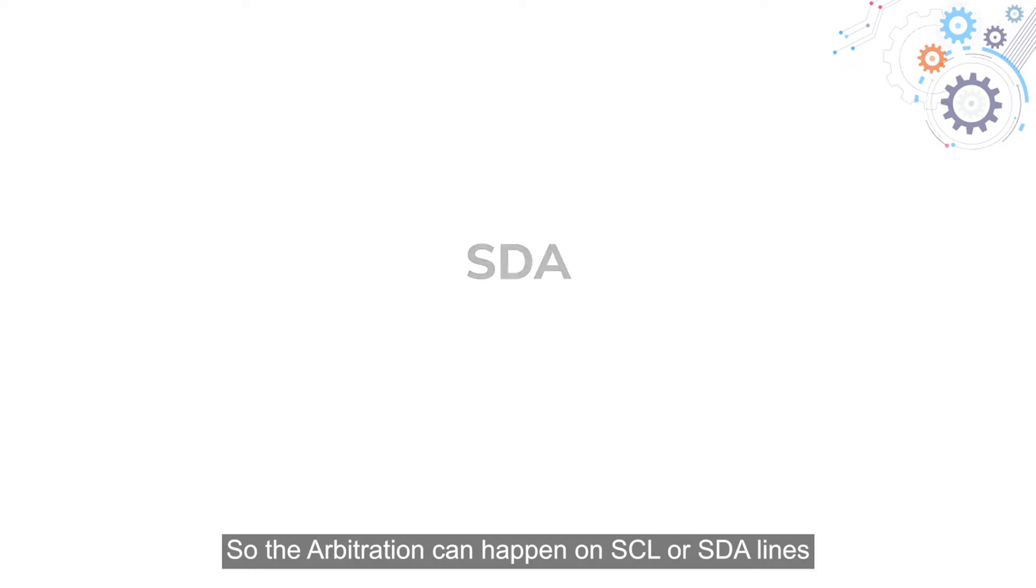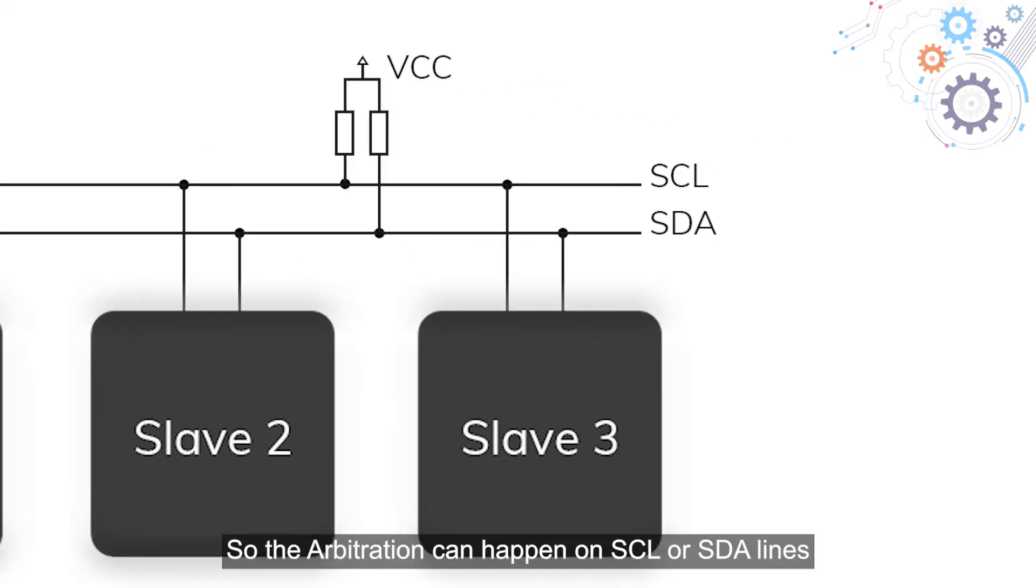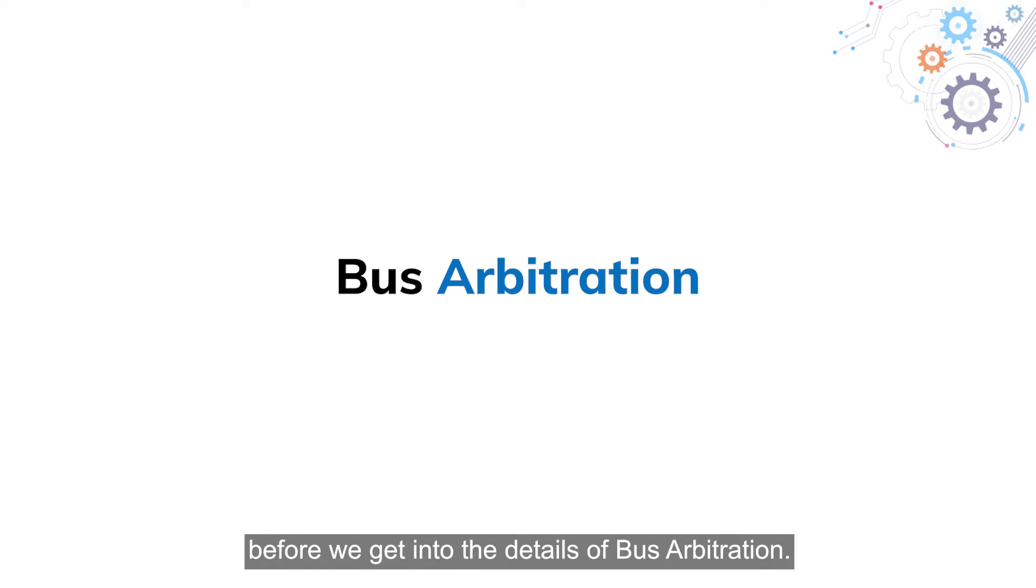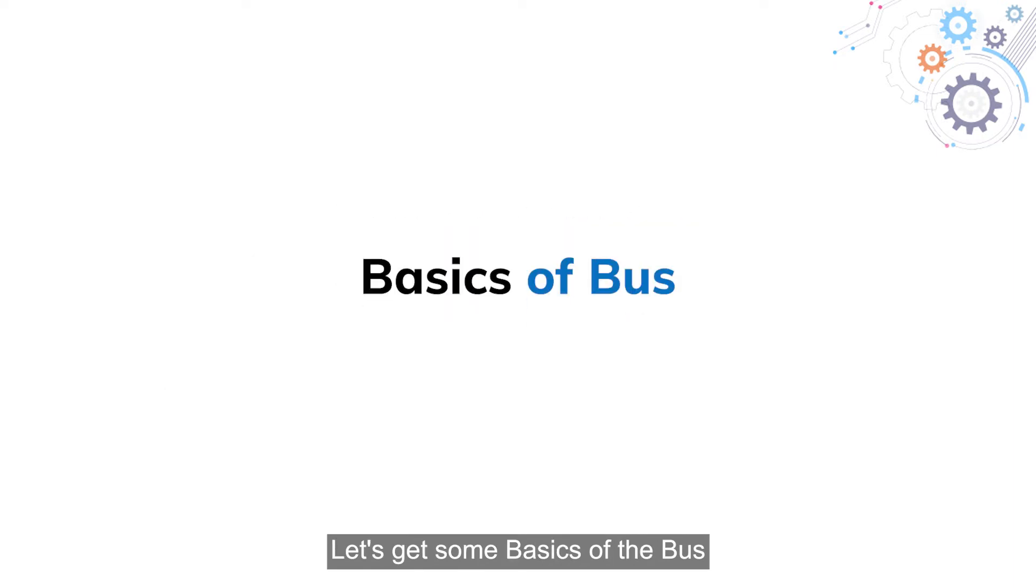I2C has two lines, SCL and SDA, so the arbitration can happen on SCL or SDA lines. Before we get into the details of bus arbitration, let's get some basics of the bus.